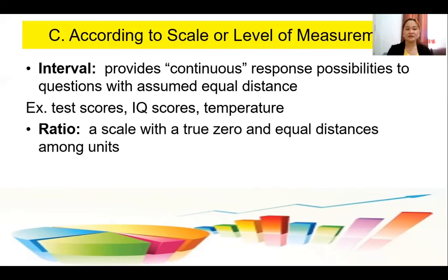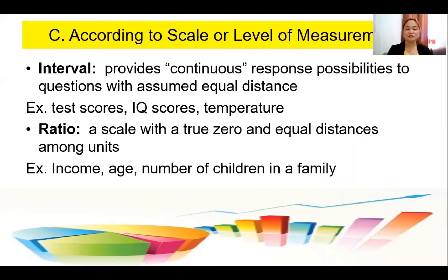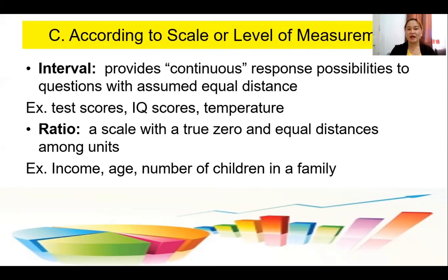The last is ratio, which is the highest level of measurement — a scale with a true zero and equal distance among units. The ratio level has the characteristics of nominal, ordinal, and interval. Examples include income, which is based on educational qualification; age intervals for citizens and teenagers; and number of children in a family — from one child up to twelve. That is ratio level, the highest level of measurement.